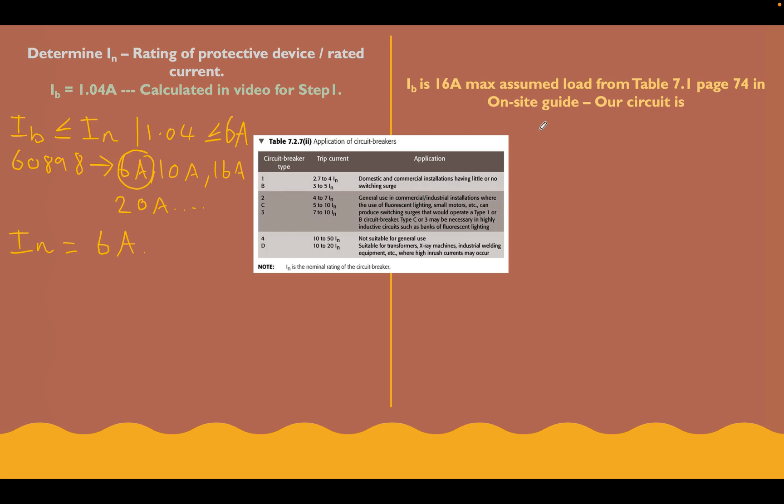On this side, exactly the same thing again. We know that our design current here is 16 amps. We got that from the assumed load table that we looked at in step 1. And we know the same again - our rating of our protective device we choose has got to be greater or equal to this number. On this side, we're using something which is similar but slightly different. We're using an RCBO, which is 61009, and these are made in preset values as well.